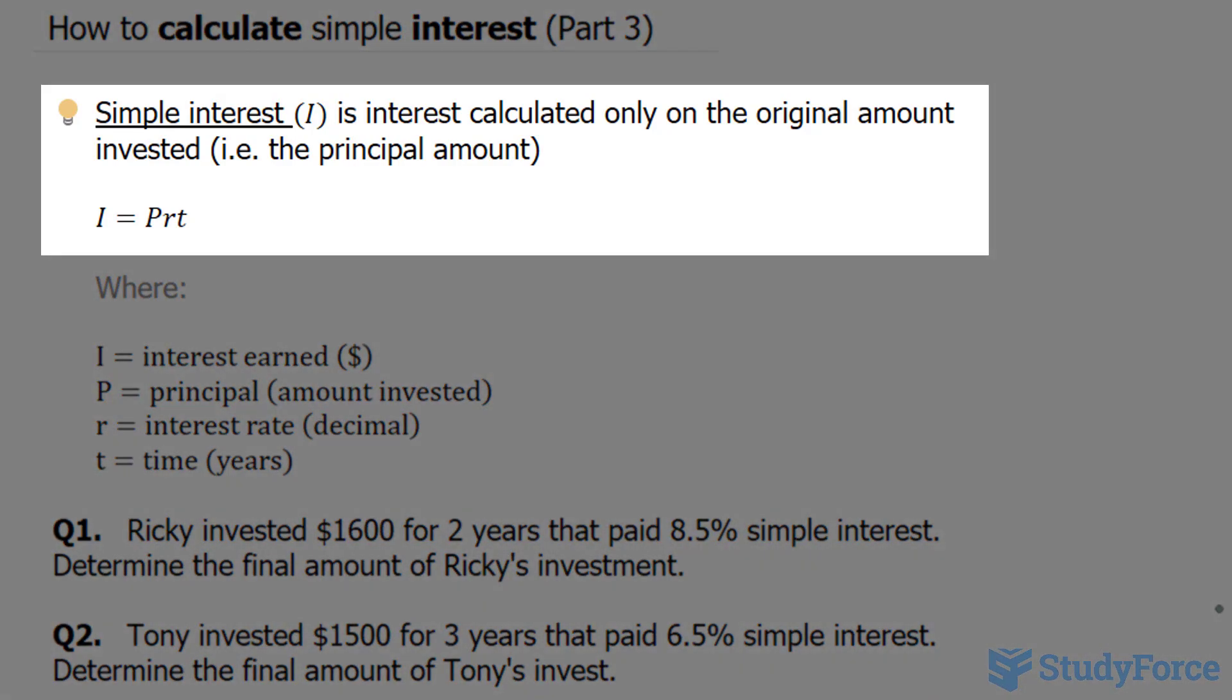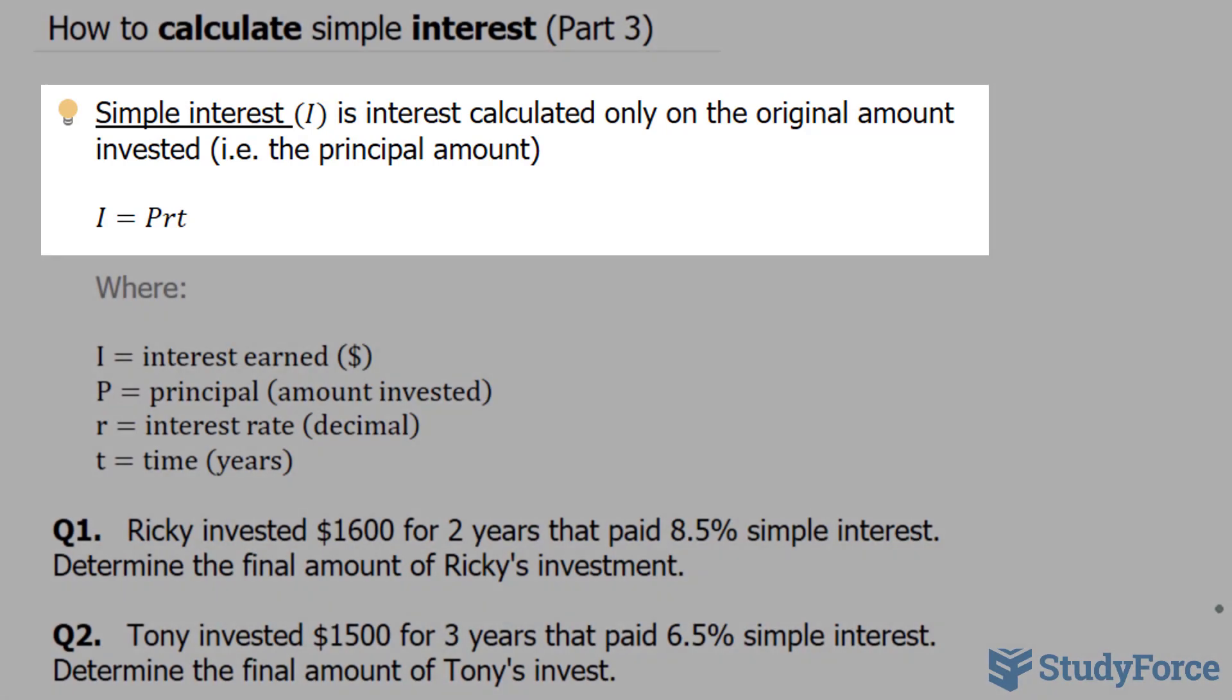As discussed in part one and part two, simple interest is interest calculated only on the original amount invested, known as the principal amount.